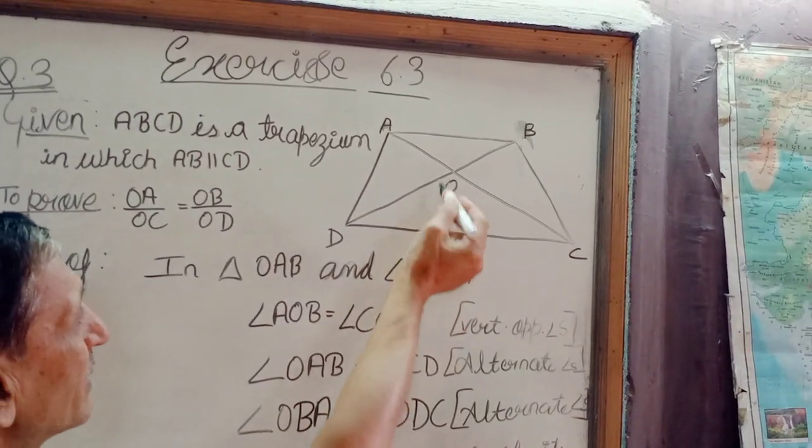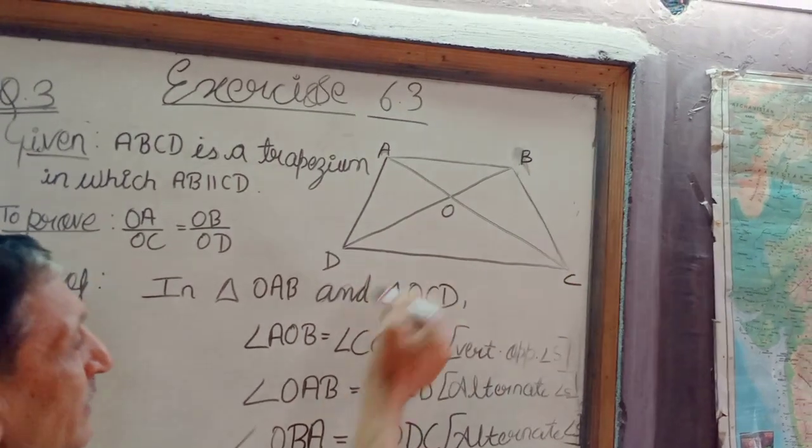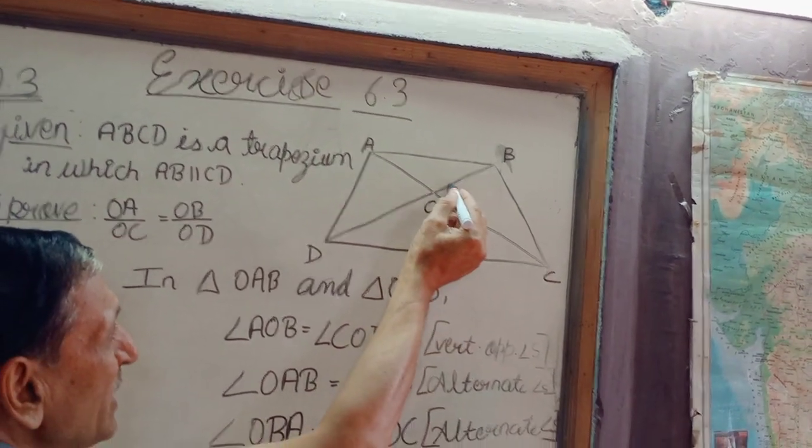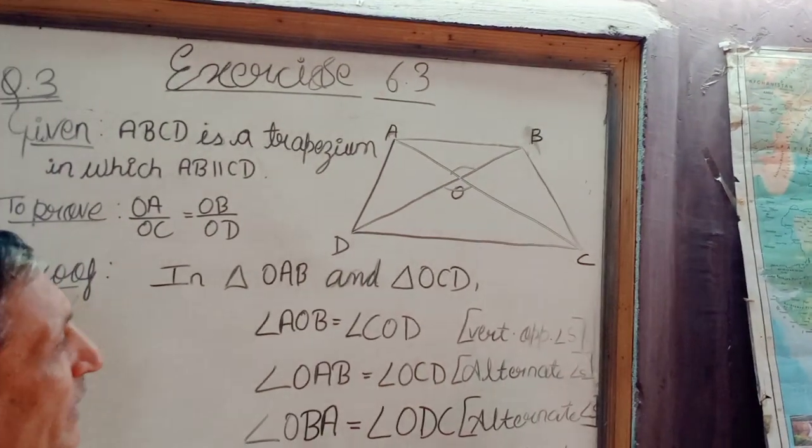In triangle OAB and triangle OCD, we have angle AOB is equal to angle COD, vertically opposite angles.